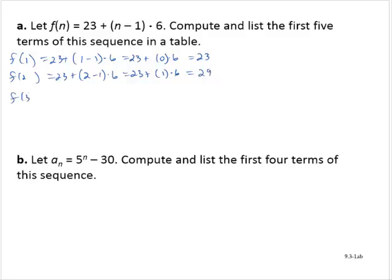f of 3 is 23 plus 3 minus 1 times 6, which is 23 plus 2 times 6, so that's 23 plus 12.